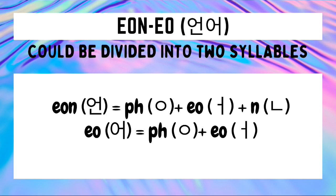How do we write 'onoh' in Hangul? It is composed of two syllables. To write the first syllable 'on,' we draw first a placeholder ieung, followed by the 'o' character, followed by the nieun character. For the second syllable 'o,' we draw first a silent ieung, followed by the 'o' character itself. Both syllables have an ieung character at the first position, and those are just for placeholding. We combine the Hangul for each syllable to form the Hangul of the word 'onoh.'